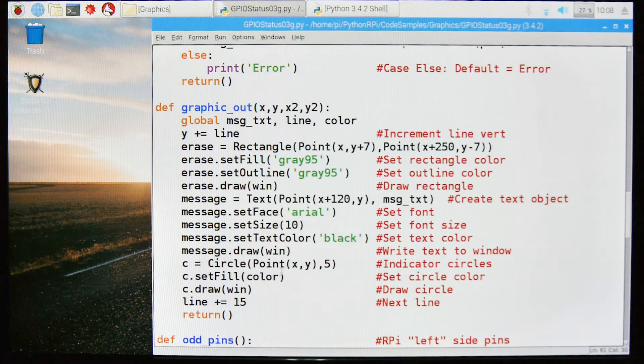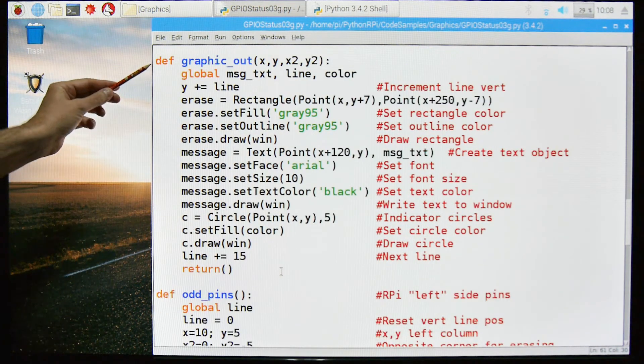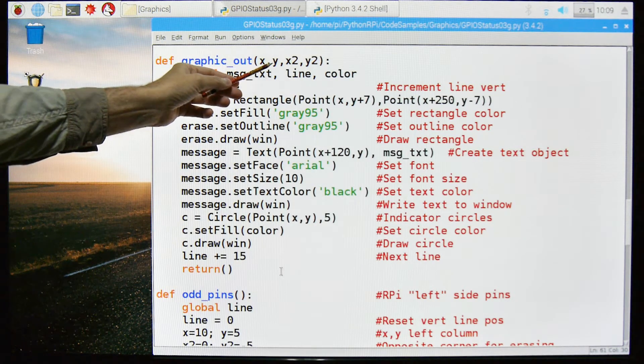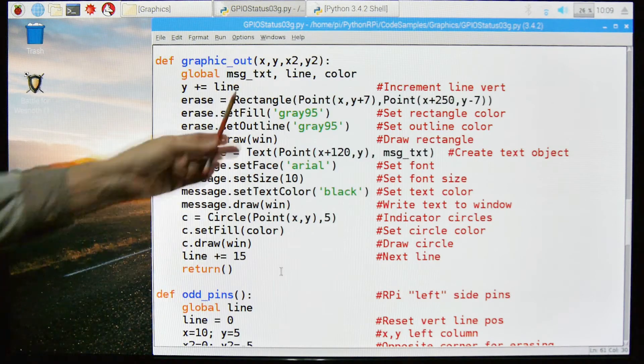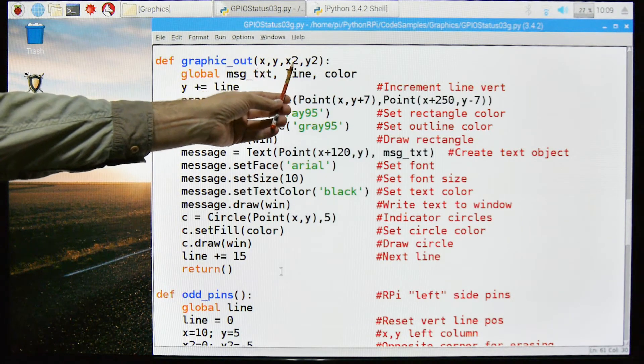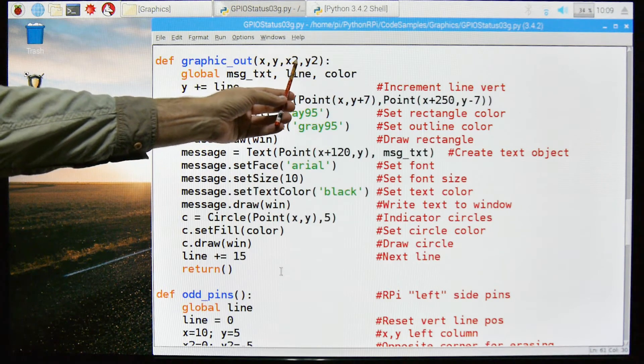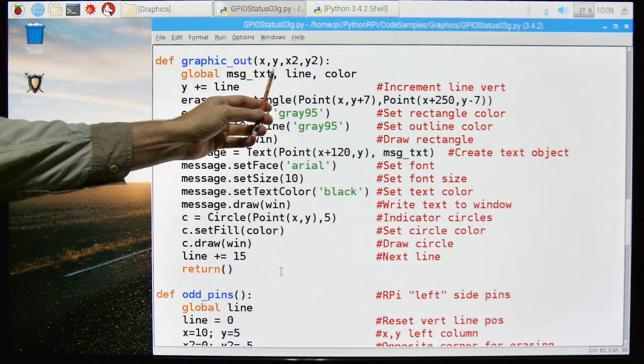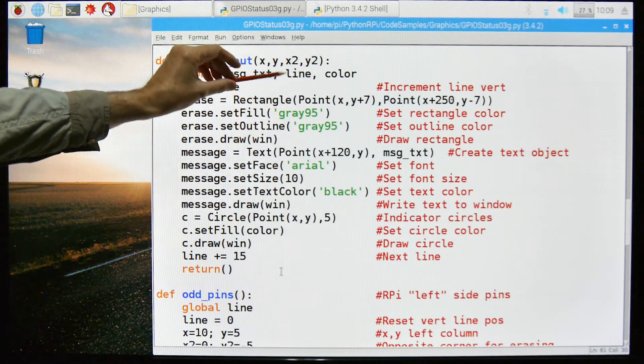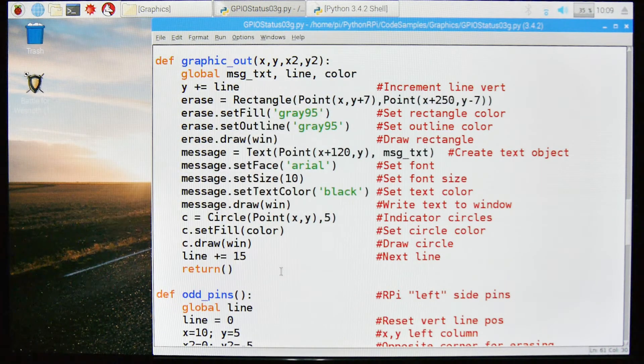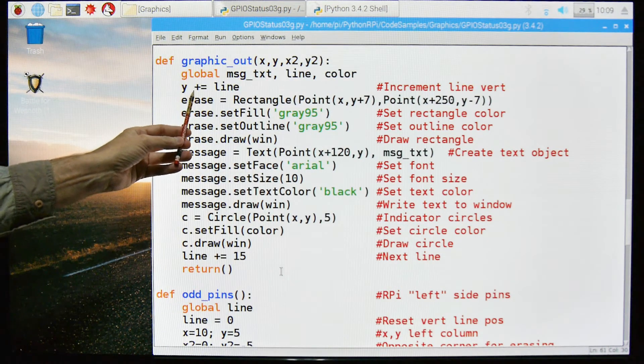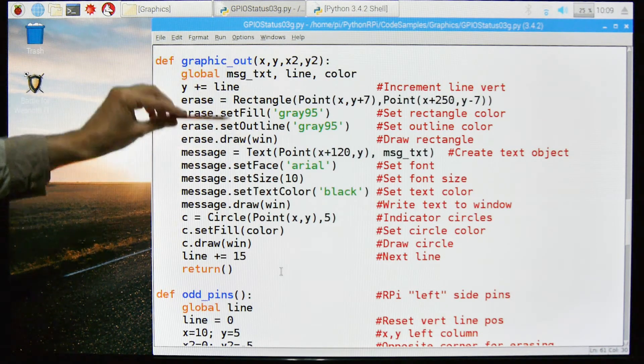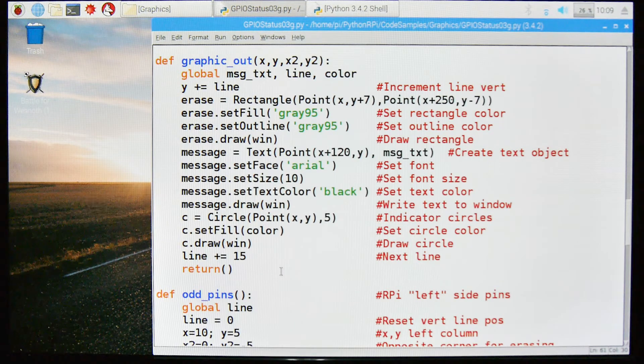So let's look at this graphic out statement. Graphic out is what's going to create our output. We're going to pass it X and Y coordinates and X2 and Y2 coordinates. This is the beginning of the text box and this is the end of the text box, so this is the lower left corner and this is the upper right corner of a text box. We have some global variables, the message text, the line, so that's vertically where it is in the window, and then the color. And so what we're going to do is Y is our vertical position and line is going to tell us how far up and down to move that position.